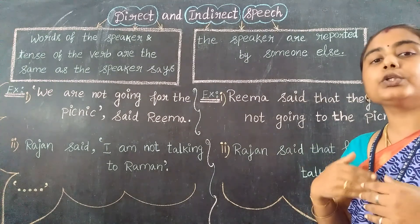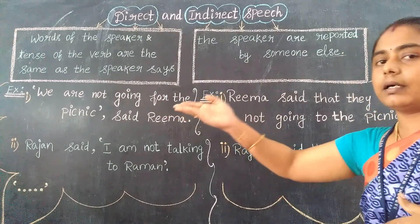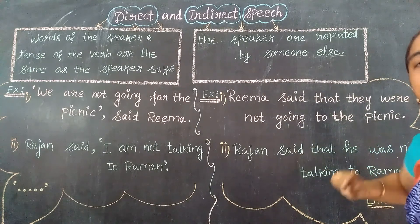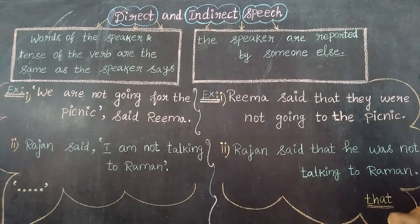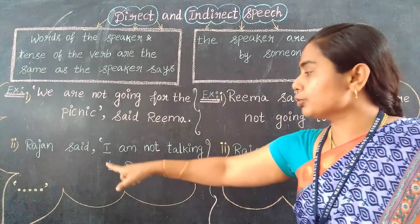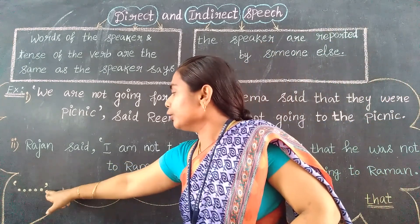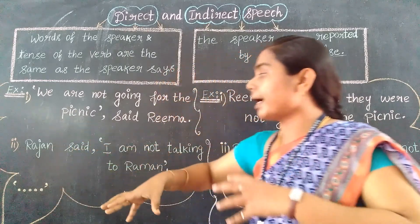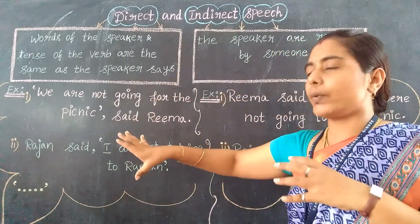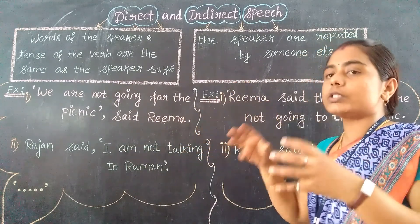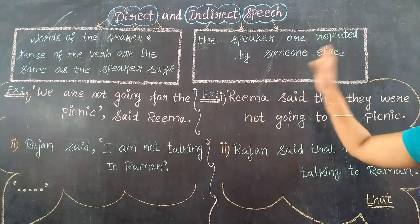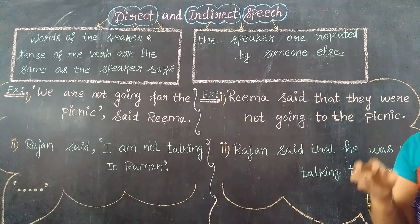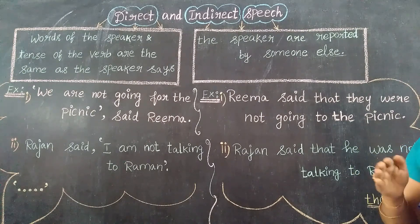While starting to say about the speaker — who said, who is going to say — you should use 'that.' So these are the two differences: in direct speech everything is enclosed in quotation marks, either double or single quotation. While talking about indirect speech, we should indicate it by using 'that' in between the sentence.